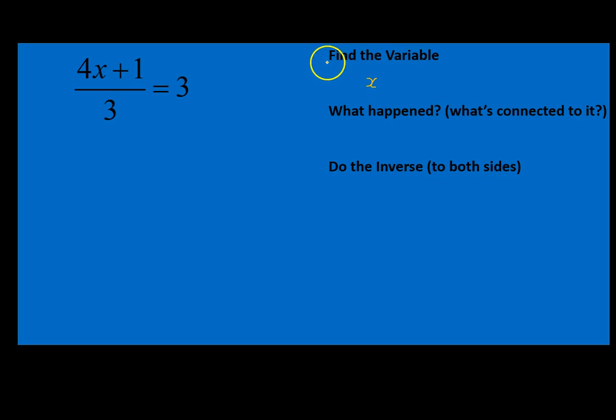So our variable is x. What is happening to x in this equation? It's being multiplied times 4, we're adding 1 to it, and then we're dividing that whole side by 3. So we're doing three different operations to our x, and we're going to have to undo all of those in the correct order.